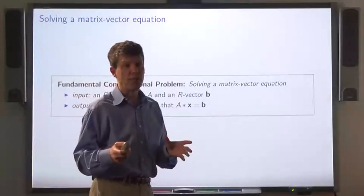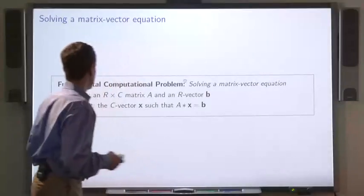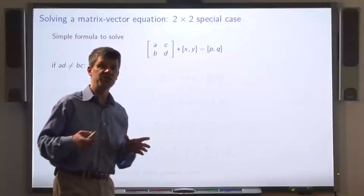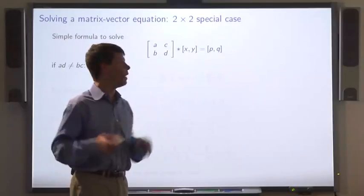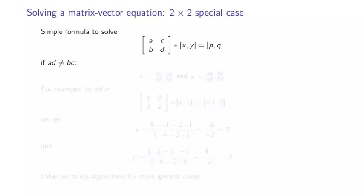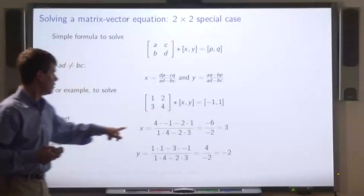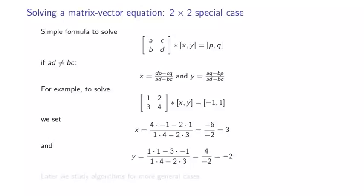This is a fundamental computational problem — solving a matrix-vector equation. The input is a matrix and a vector, and the goal is to find a vector x such that A times x equals b. Here's a way to solve the special case where the matrix is two by two. We require that ad is not equal to bc, and if that's the case, we solve by setting x equal to (dp minus cq) over (ad minus bc), and y equals (aq minus bp) over (ad minus bc). Later, we'll study algorithms for the more general case.